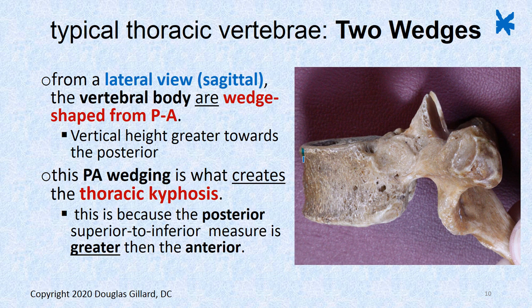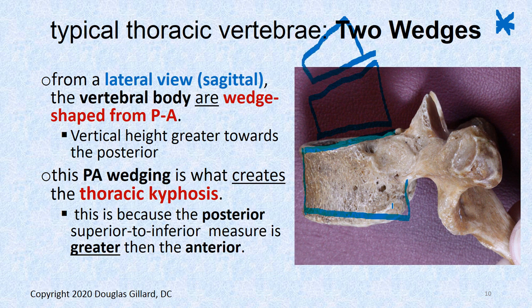The vertebral body is wedge-shaped — see how that creates a kyphotic curve when you stack wedges on top of each other. There's also some posterior-to-anterior wedging from a lateral view — we said that already.